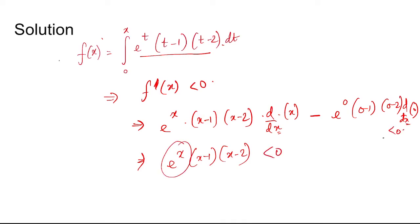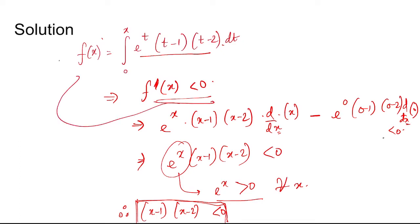Now e to the power x is always greater than 0 for all values of x, therefore (x minus 1)(x minus 2) should be less than 0. If this is less than 0, then f(x) is decreasing, because if this is less than 0, then f'(x) is negative, and f'(x) is negative means in that range f(x) is decreasing.